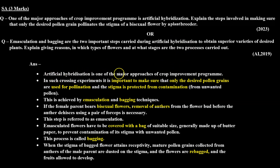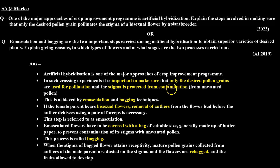Artificial hybridization is one of the major approaches of crop improvement programs. In such crossing experiments, it is important to make sure that only the desired pollen grains are used for pollination and the stigma is protected from contamination from unwanted pollen. This is achieved by emasculation and bagging techniques.